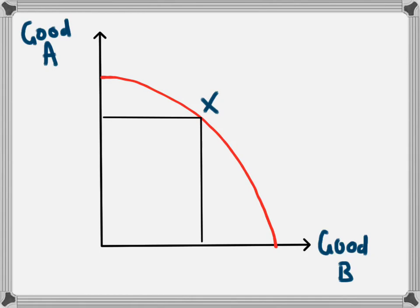If all the resources of the economy are being used efficiently, the economy will operate somewhere along this red line. For example, they could be operating at point X. At point X, the combination of products being produced are 80 of good A and 50 of good B.